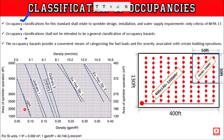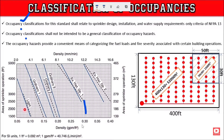The design density is given in GPM per square foot. For light hazard, the density is 0.1 GPM per square foot. For ordinary hazard, the density is 0.2 GPM per square foot. For extra hazard group, the density is 0.3 GPM per square foot. These are the standard American values as per NFPA 13.